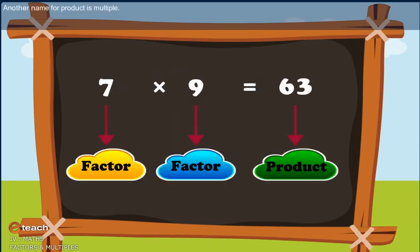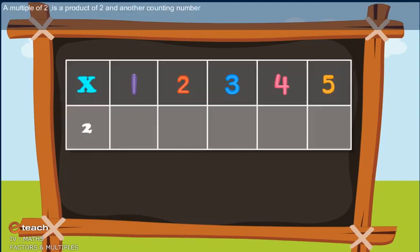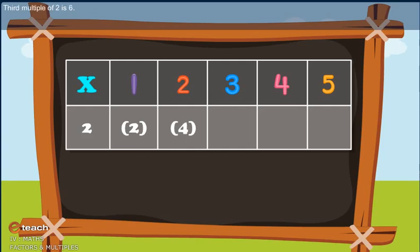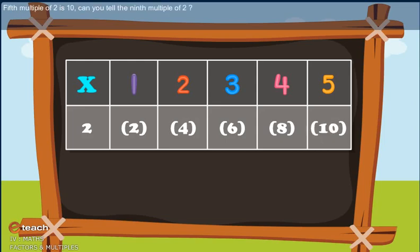Another name for product is multiple. A multiple of 2 is a product of 2 and another counting number. The first multiple of 2 is 2, the second is 4, the third is 6, the fourth is 8, and the fifth multiple of 2 is 10. Can you tell the 9th multiple of 2? Very good — it is 18.